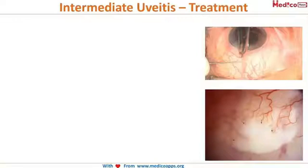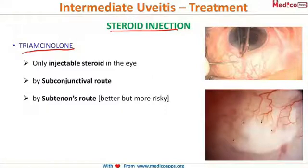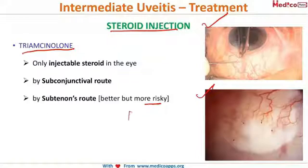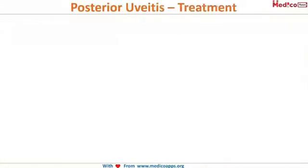Management of intermediate uveitis uses steroid injection, since drops cannot penetrate deep enough to reach the pars plana or vitreous. The only injectable steroid used is triamcinolone, given via the subconjunctival or subtenon route. Subtenon injection carries more risk as it can perforate the sclera if not done carefully.